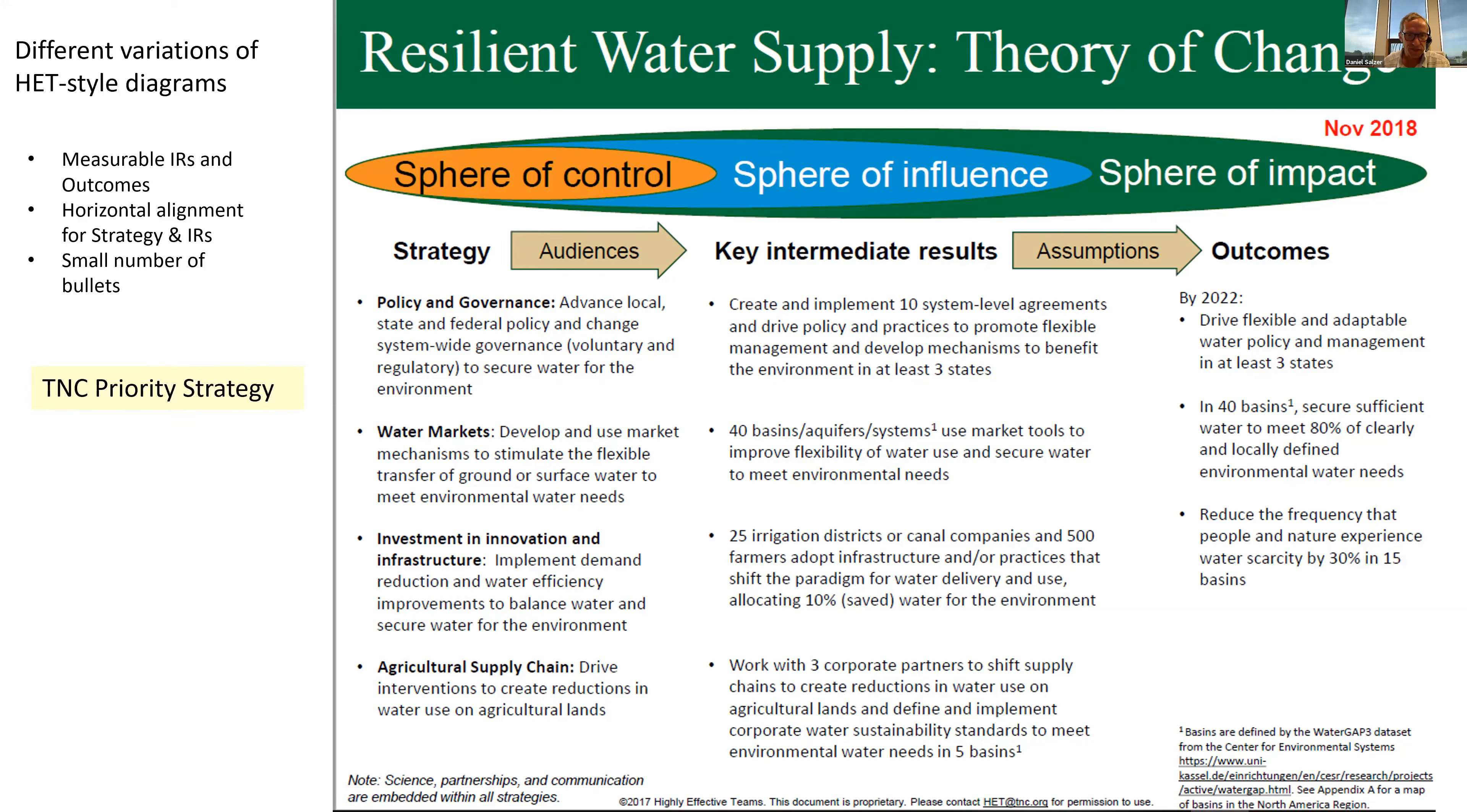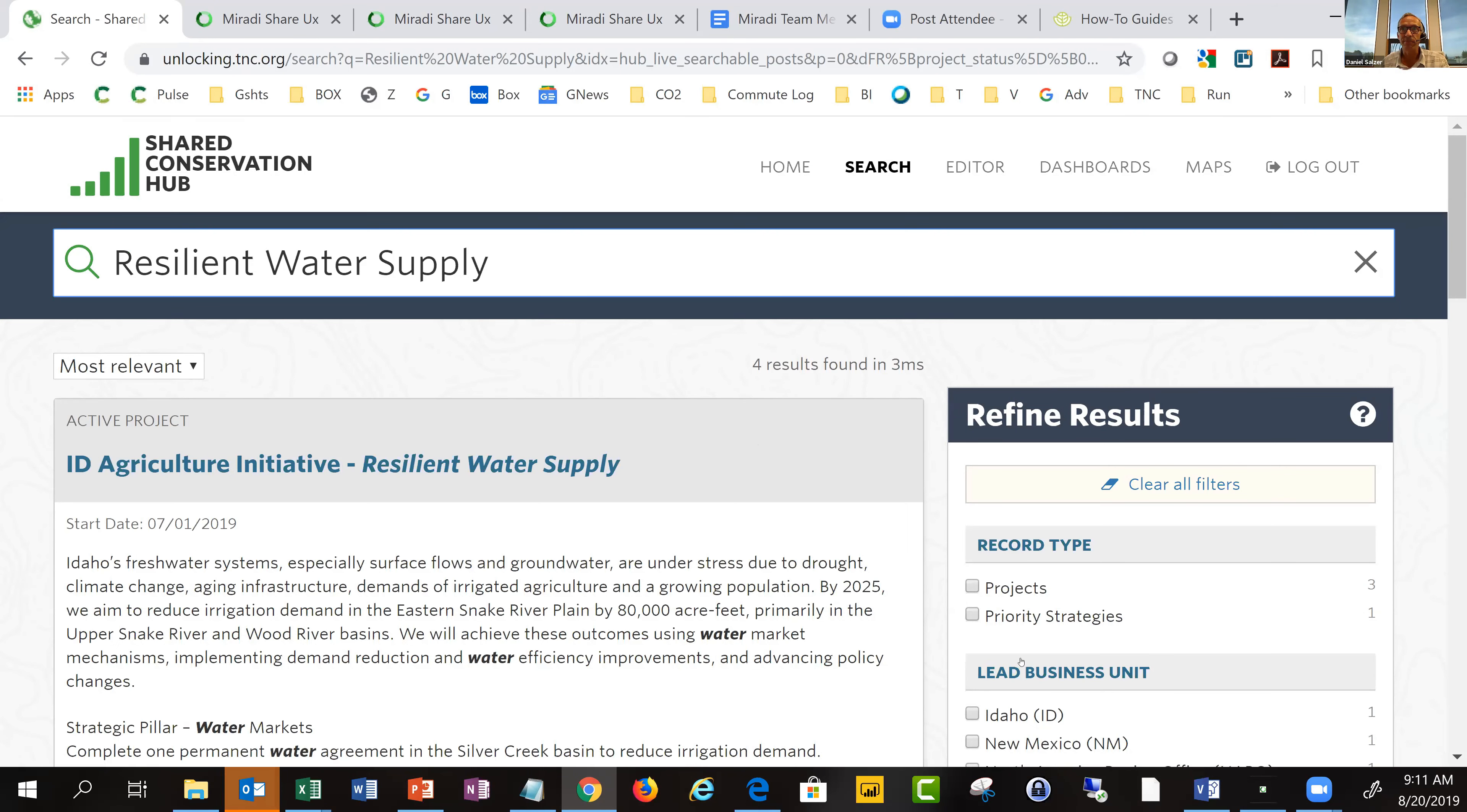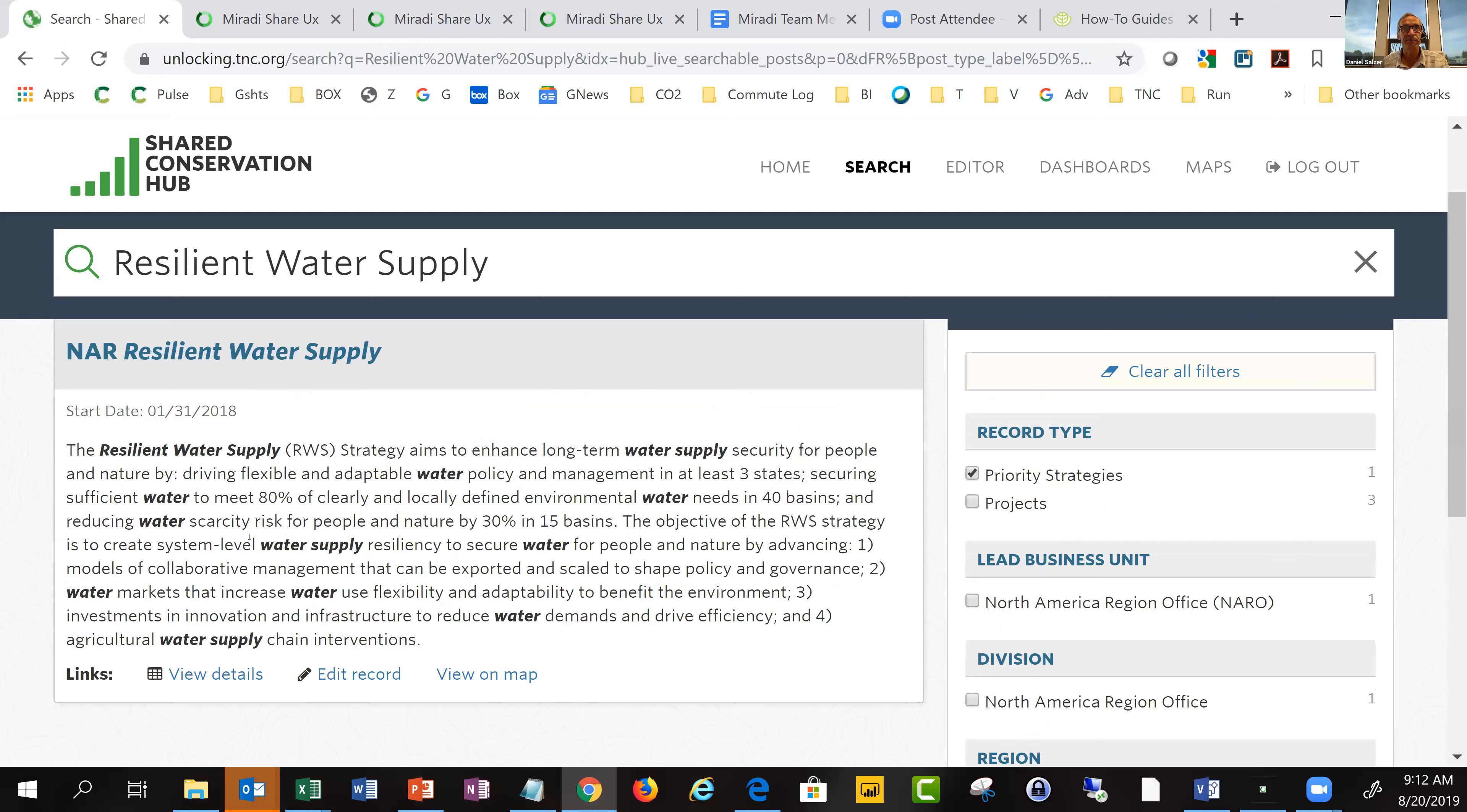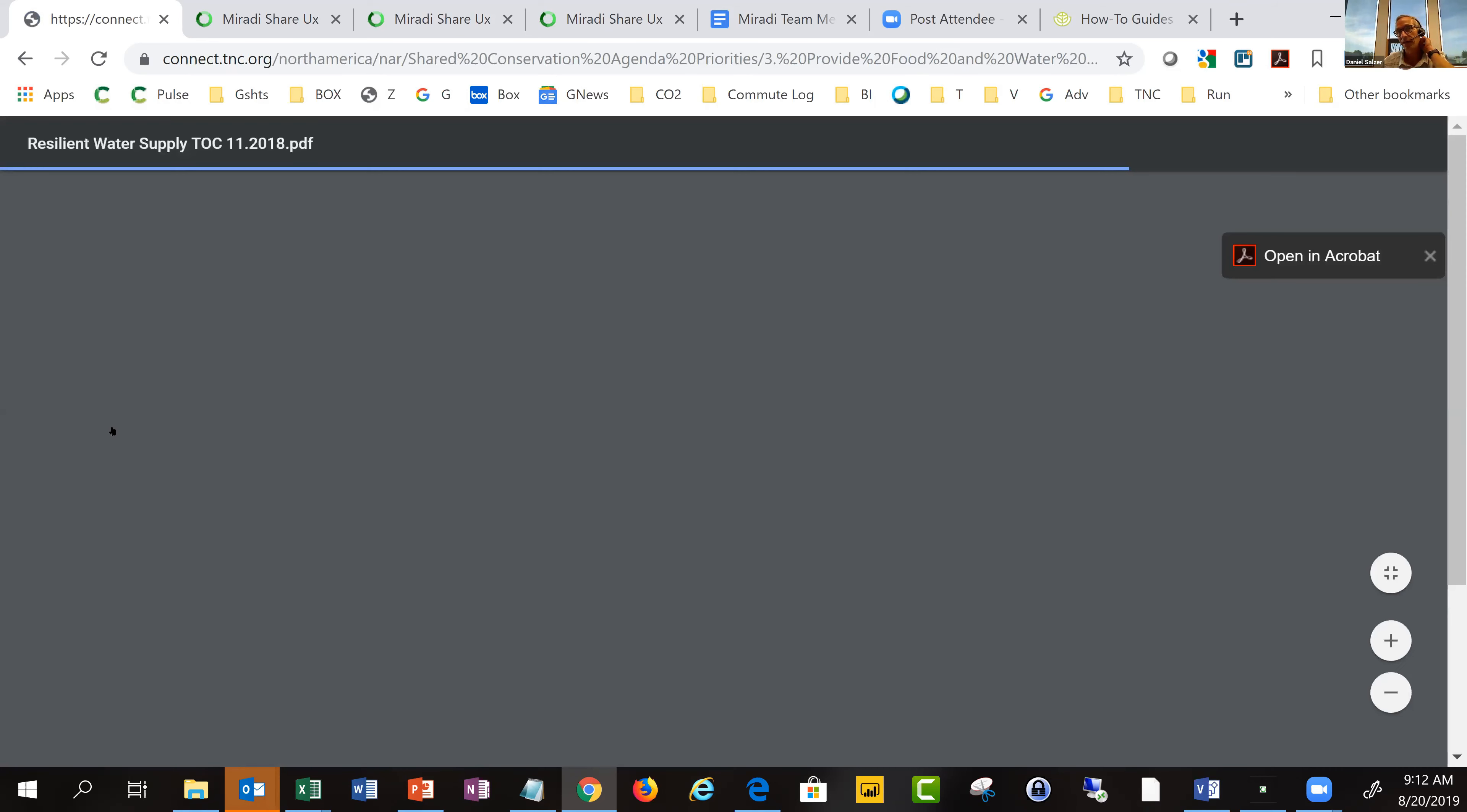These theories of change for the priority strategies are accessible to all of you via the shared conservation hub. If you go to unlocking.tnc.org and go to the search panel, you can use the filters on the right hand side. If you click on view details, you'll see details of that project.